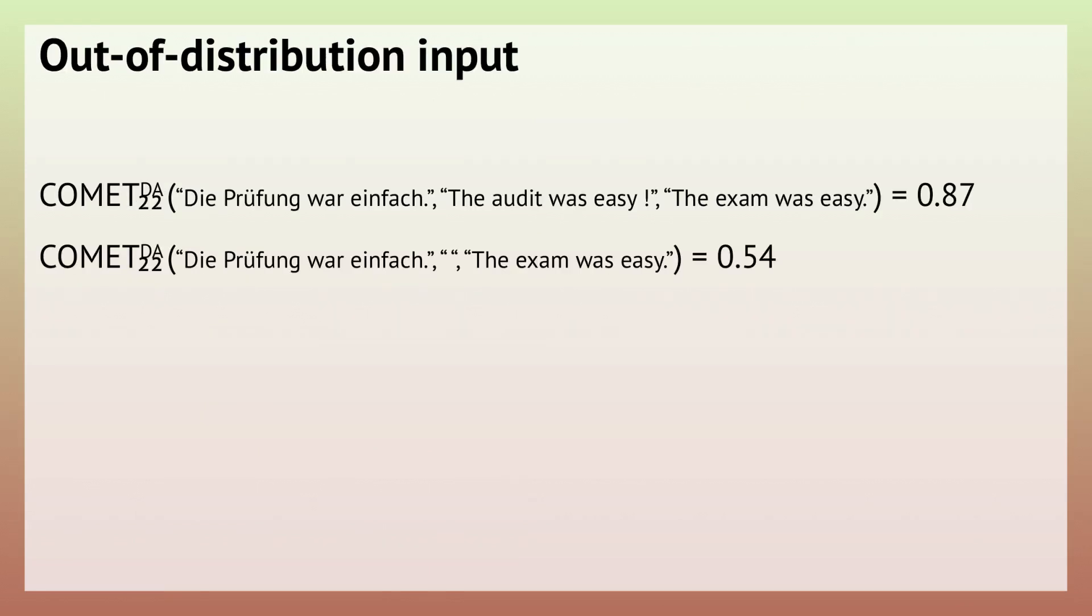The last issue we'll cover is about out-of-distribution input. COMET is trained on past WMT data, so it mostly saw machine translations of various quality. With the rise of use of LLMs for various NLP tasks, it can happen that the LLM does not produce anything. Following the direct assessment scoring guidelines, this should in most cases receive a score of zero. However, COMET will assign a non-zero value to this empty translation.